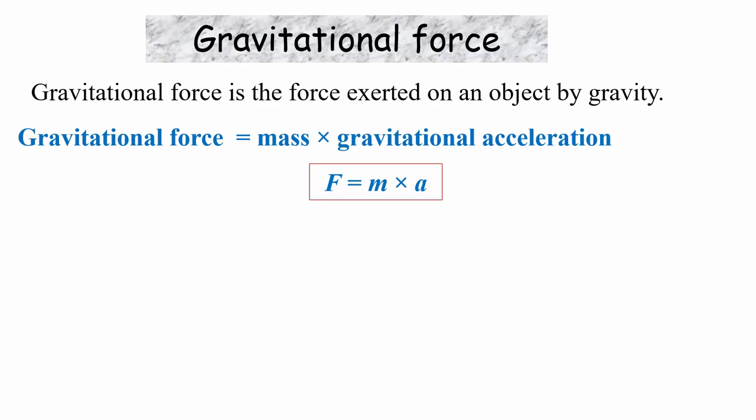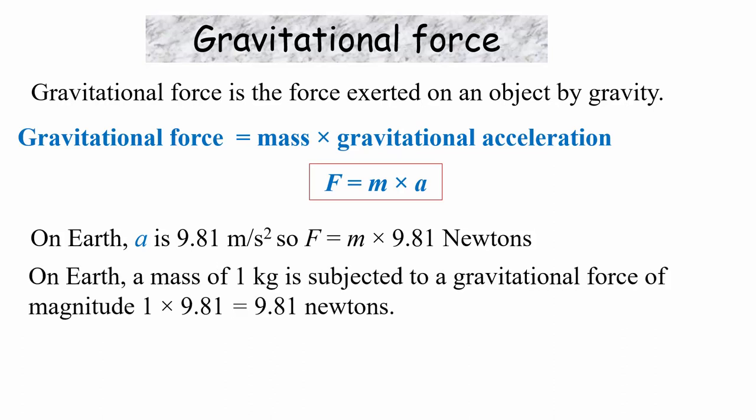On Earth, as we said, the acceleration is 9.81 meters per second squared. So, our formula becomes F, F for force, equals M times 9.81. And the result is in the units of Newtons, named after Sir Isaac Newton. So, if we look at a mass of 1 kilogram, then the gravitational force experienced is 1 times 9.81, which is 9.81 Newtons.